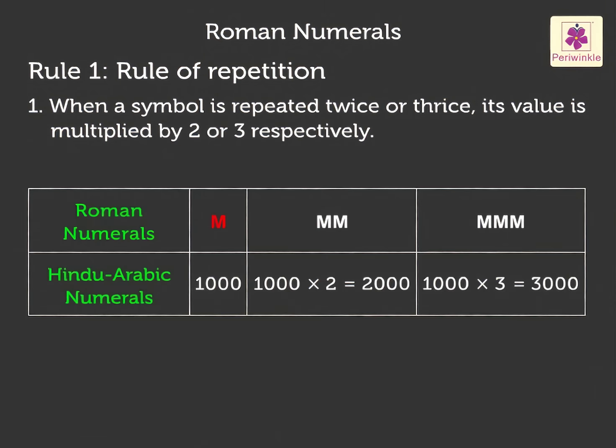For example, M is equal to 1000. MM is equal to 1000 multiplied by 2 is equal to 2000. MMM is equal to 1000 multiplied by 3 is equal to 3000.